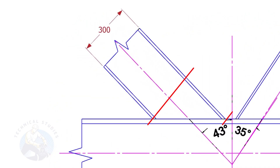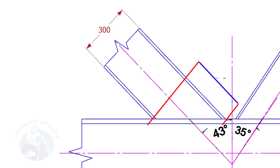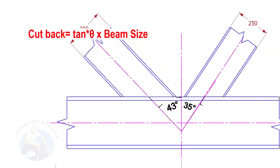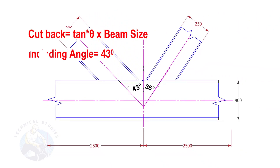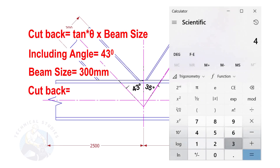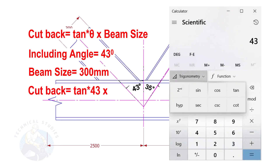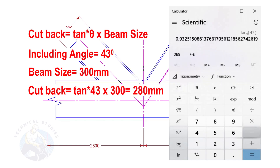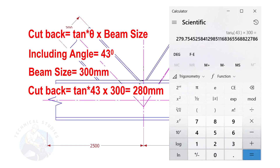Let us calculate the cutback of this beam. The formula to calculate the cutback is tan(angle) multiplied by the size of the beam. If the including angle is 43 degrees and the size of the beam is 300, the cutback is tan(43) × 300. The answer is 279.7, which we write as 280 millimeters.